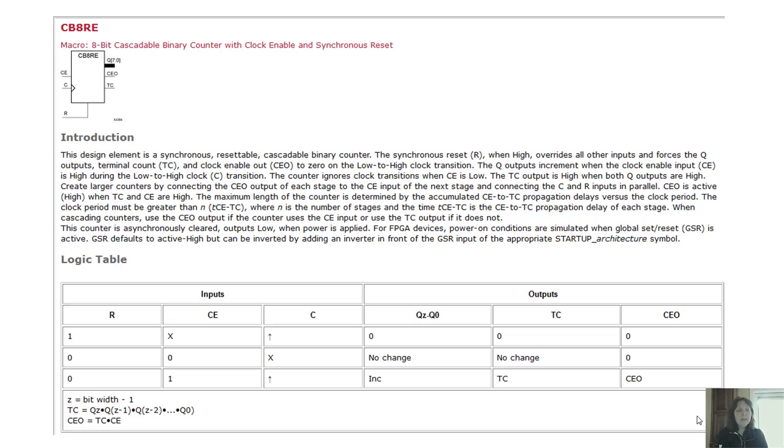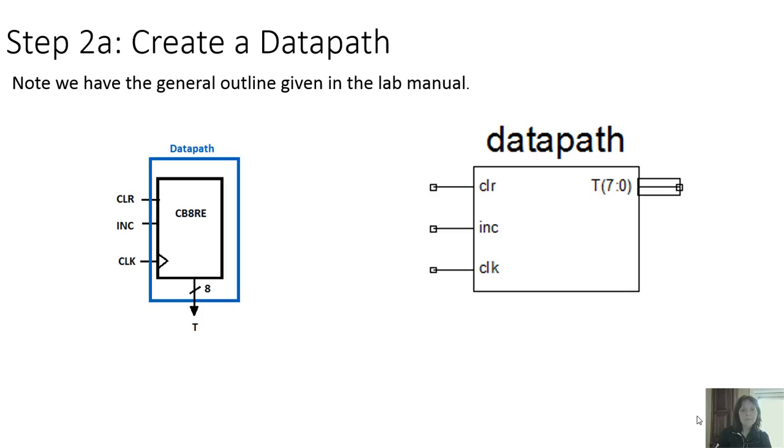And so we have basically our general model. We have our data path defined for us. We have our inputs and outputs labeled of the names that we're supposed to use. And so we can use that to create our schematic.